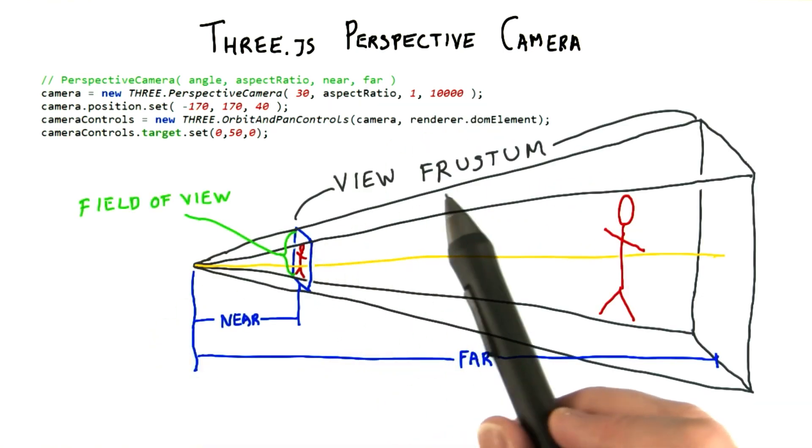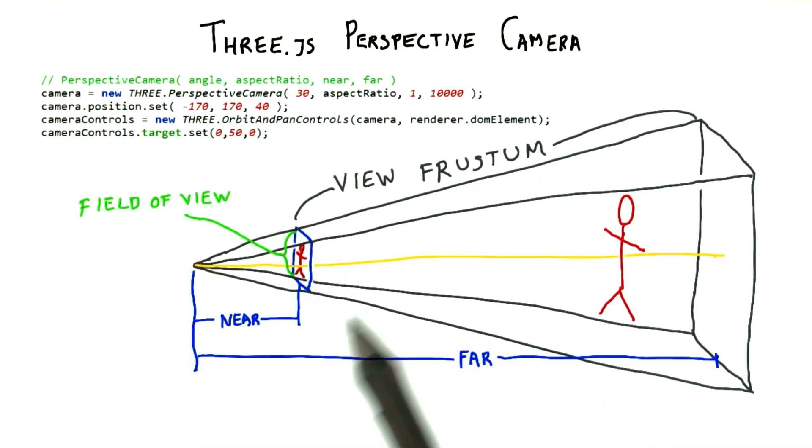Remember the view frustum? It's back at last. The near and far distances are measured from the tip of the pyramid, where the camera is placed, down a central axis.